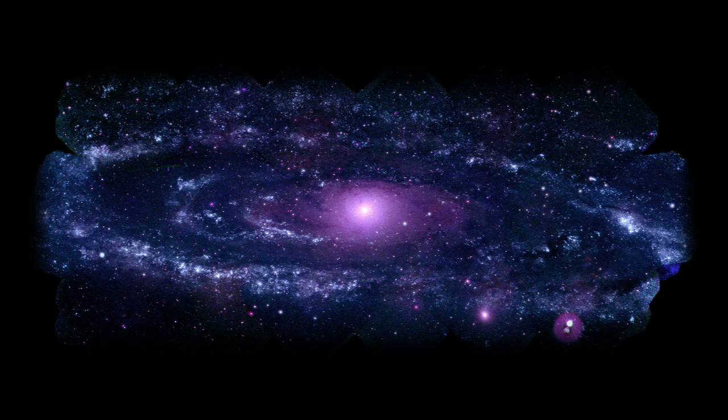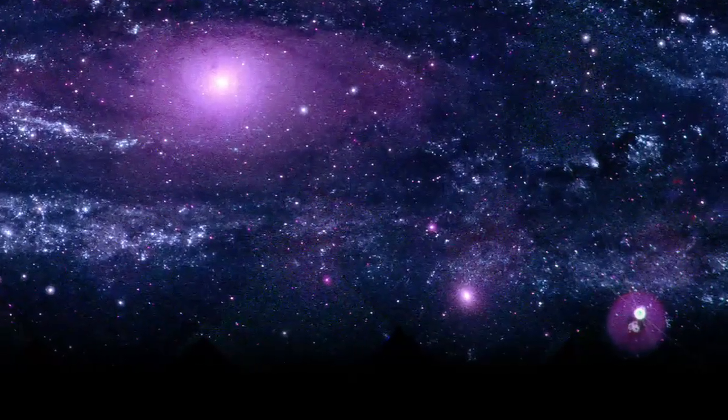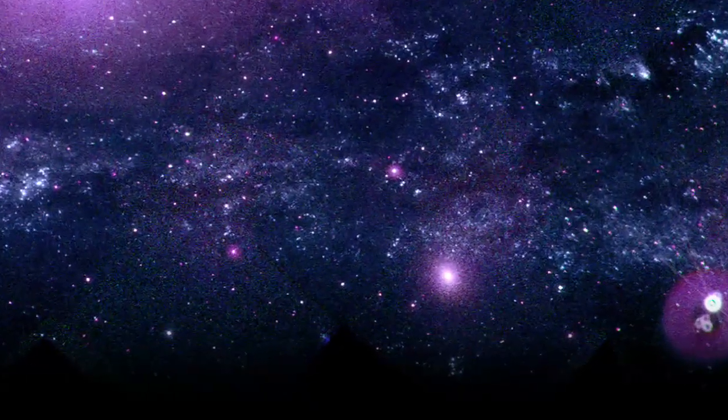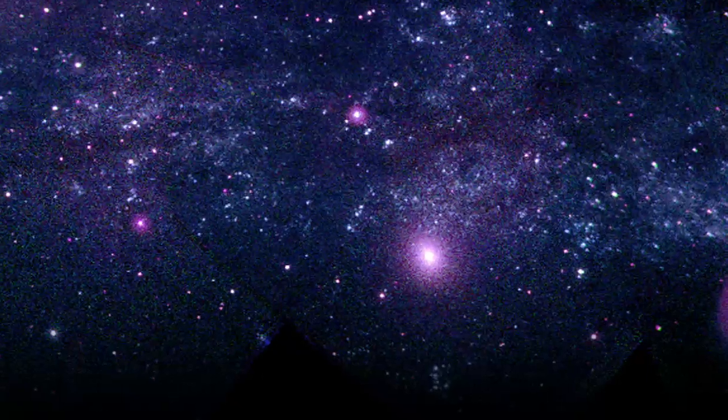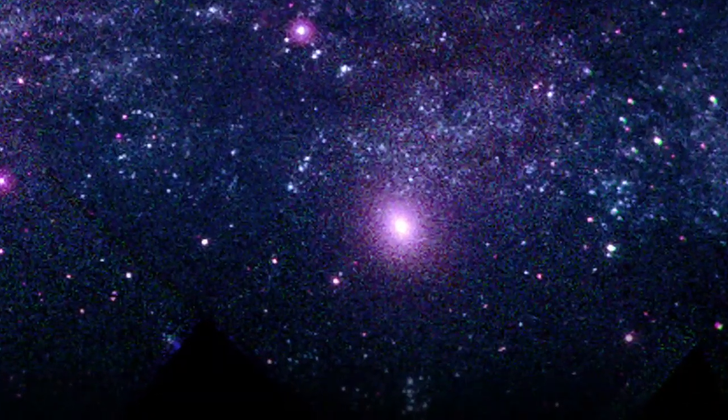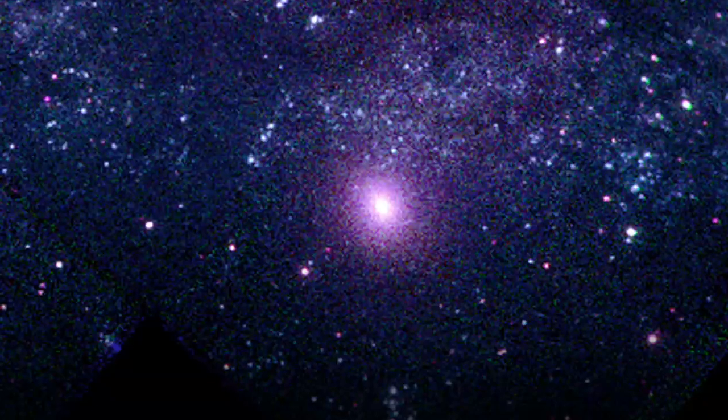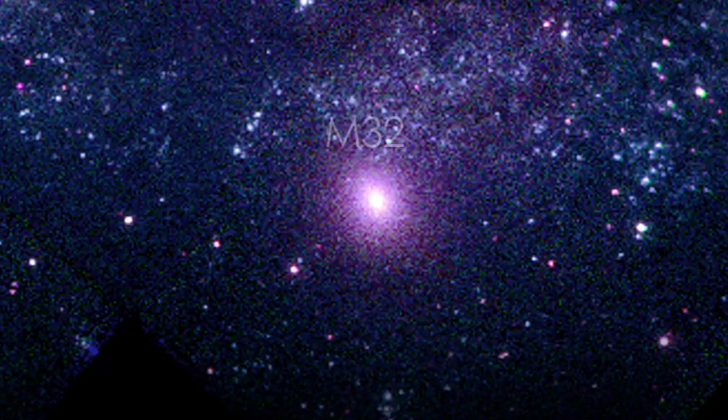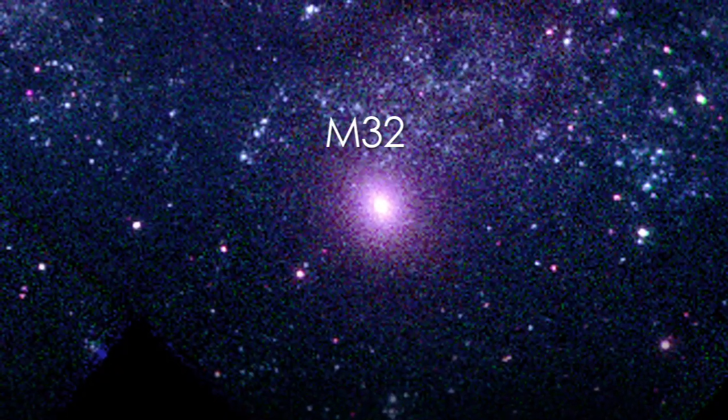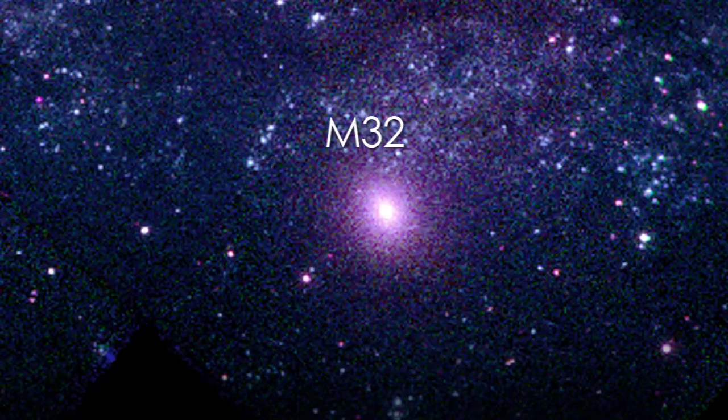Speaking of which, this is M32, one of many dwarf galaxies orbiting M31. These galaxies are usually not very bright in the ultraviolet because they lack young stars. But M32's core is so bright in the UV because it likely contains many blue and old stars.